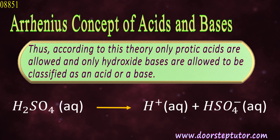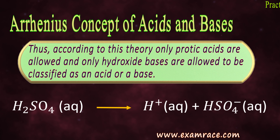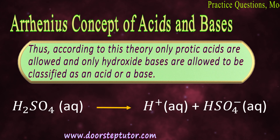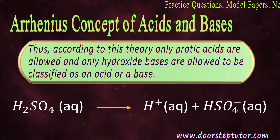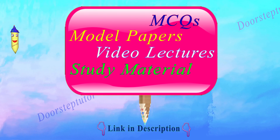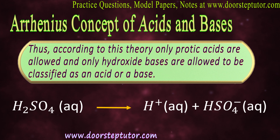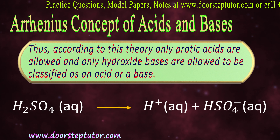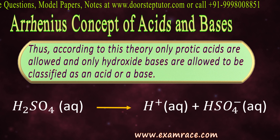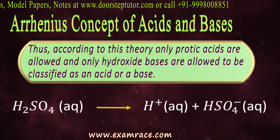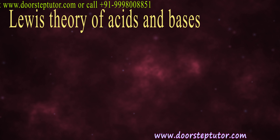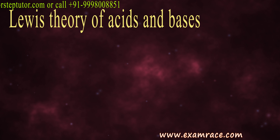Here we have a reaction: H2SO4 in aqueous form dissociates to give H+ — a protic acid — and HSO4- — a hydroxide base. So H2SO4 in aqueous form is producing one acid and one base. This was the Arrhenius concept. Now let's move towards the next theory — the Lewis theory of acids and bases.